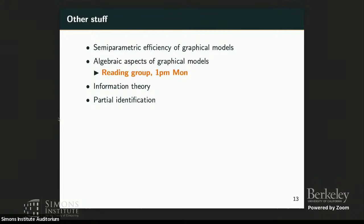So, as I said, I'm interested in this type of problems, model selection with confidence and less stringent assumptions about causal models. There are also some other stuff I'm interested in like semiparametric theory of graphical models and algebraic aspects of graphical models, and we have a weekly reading group at 1pm on Monday. Everybody's welcome. Also interested in information theory and partial identification. Okay, I want to thank you very much.